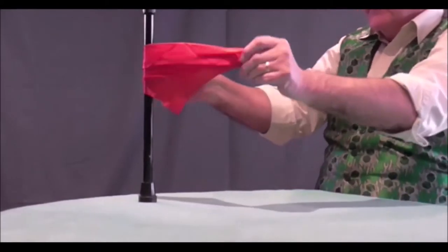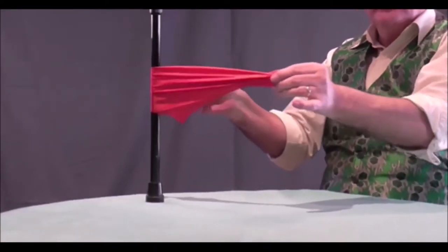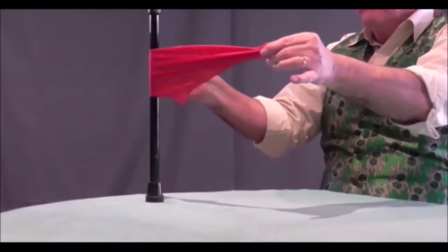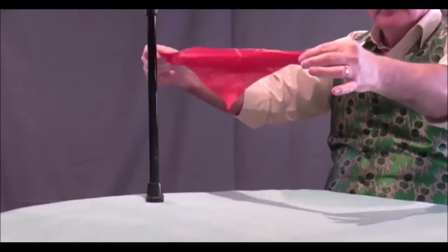You take a scarf or a handkerchief, a silk handkerchief, and a cane, and just by giving it a bit of a tug, the scarf appears to pass right through the cane.